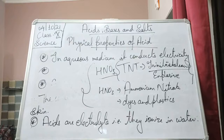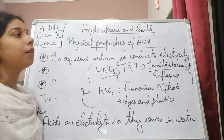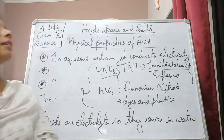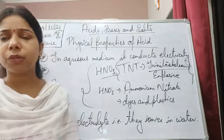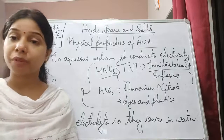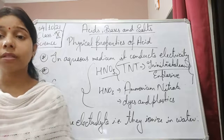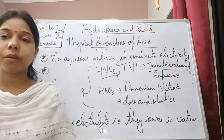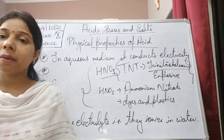Now let us move on to bases. In general, before knowing the actual definition involving the hydroxide ion, we knew that bases are simply bitter in taste, and they generally help in neutralizing acids. Later, according to Arrhenius, the definition is that bases release hydroxide ions in water. There are other definitions given by Bronsted, Lowry, and Lewis also, but those we will study in higher classes. Arrhenius stated that when a base is dissolved in water, it releases hydroxide ions, and the number of hydroxide ions indicates the basicity of a substance.